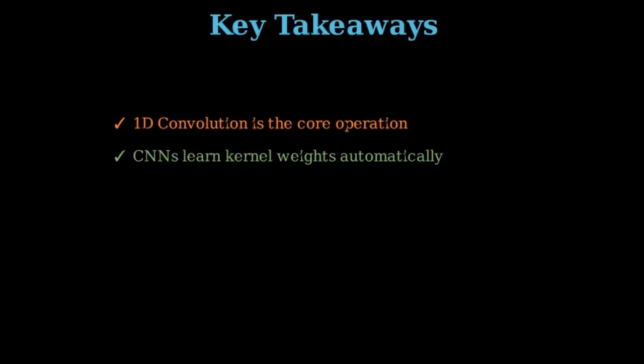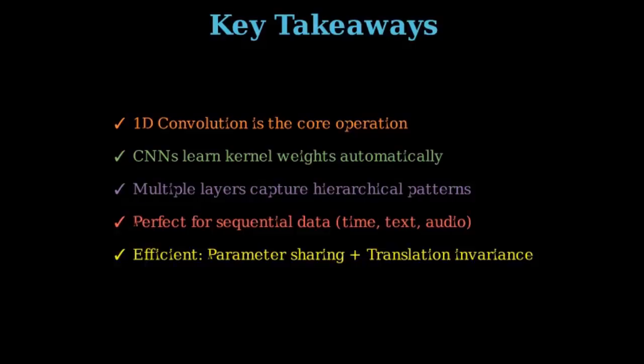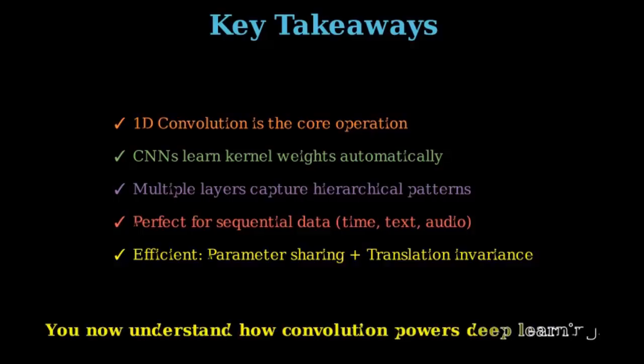Let's put it all together and see what we learned today. 1D convolution is the core operation in the 1D convolutional neural network. The CNN learns weights automatically, and multiple layers capture hierarchical patterns. These are perfect for sequential data, and they are efficient. So now we understand how the CNN works. Thank you for watching, and see you in the next video.